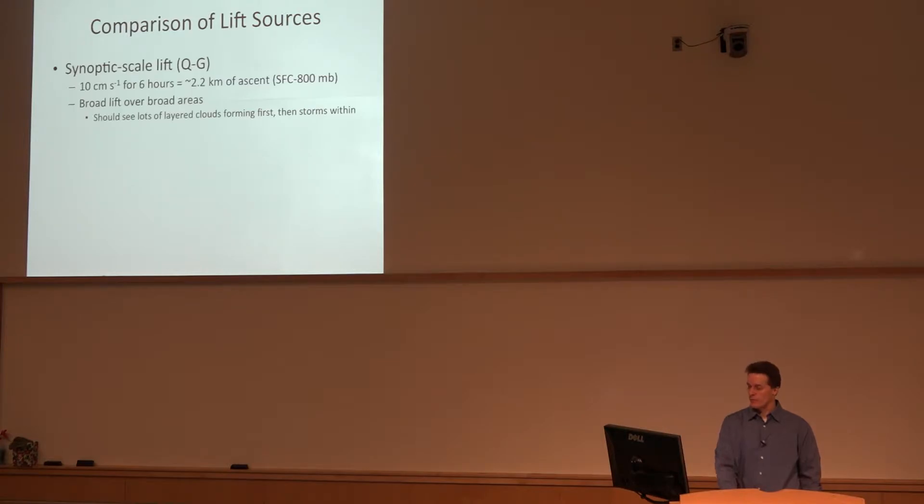Okay, the comparison of the lift sources. Synoptic scale lift, maybe 5-10 centimeters per second for six hours. In this case you get 2.2 kilometers of vertical displacement, which is roughly the equivalent of going from about the surface to 800 millibars. So the air rises about that far over a six-hour period. That's typical of synoptic scale lift. When you have lift over broad areas like this, you should expect to see broad areas of cloud cover forming if there's sufficient moisture, and in those rare cases you'll see storms popping up all within a broad area.